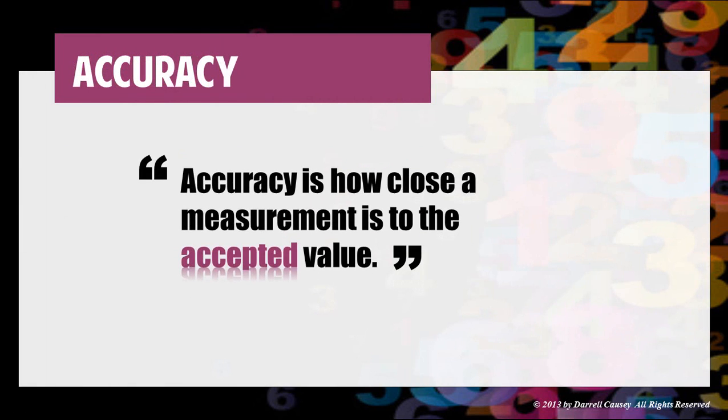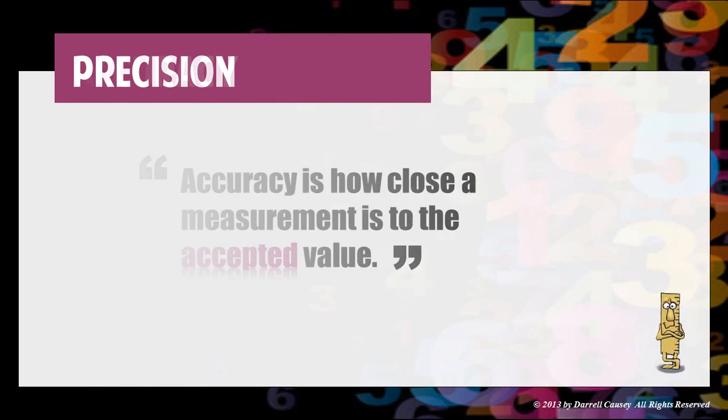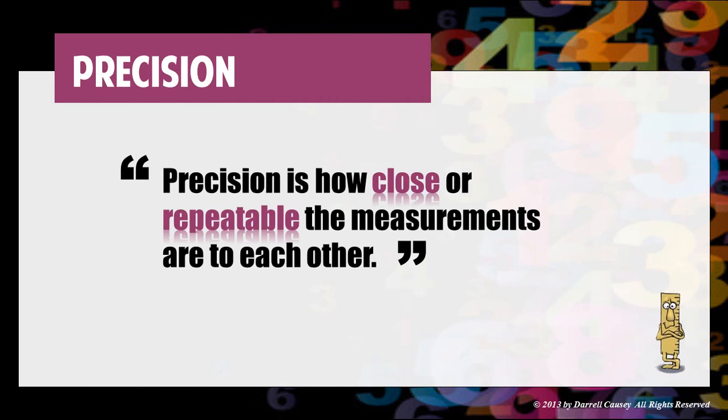So accuracy is how close a measurement is to the accepted value and precision is how close or repeatable the measurements are to each other.